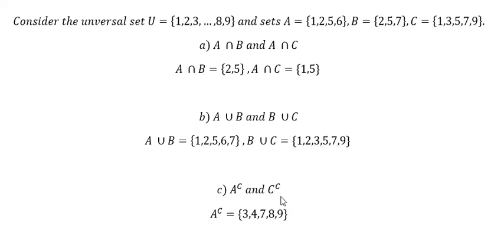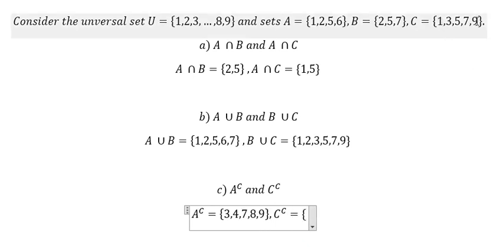Now we do the same with C. We ignore the numbers in set C, so we have C^C = {2, 4, 6, 8}.